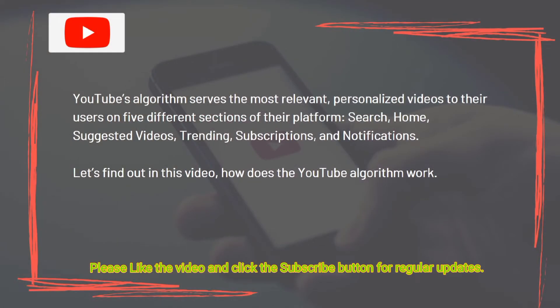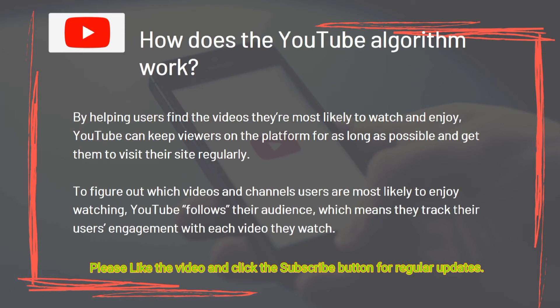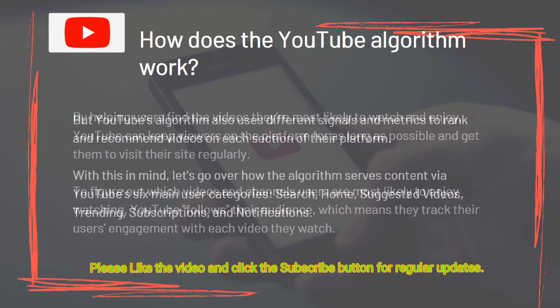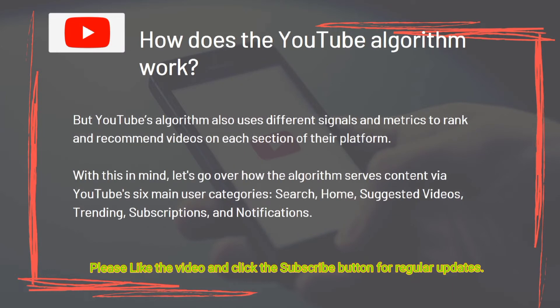By helping users find the videos they are most likely to watch and enjoy, YouTube can keep viewers on the platform for as long as possible and get them to visit regularly. To figure out which videos and channels users are most likely to enjoy, YouTube follows their audience — tracking users' engagement with each video they watch. YouTube's algorithm also uses different signals and metrics to rank and recommend videos on each section of their platform.